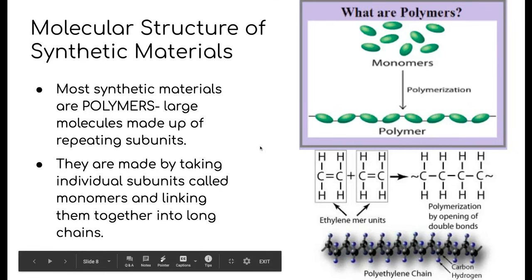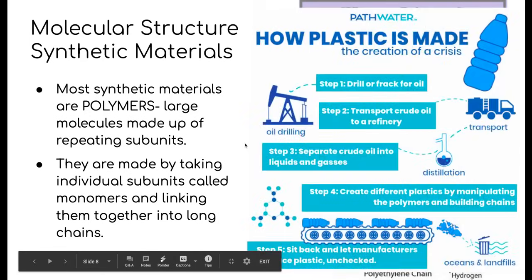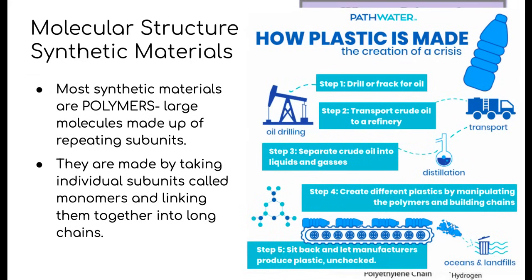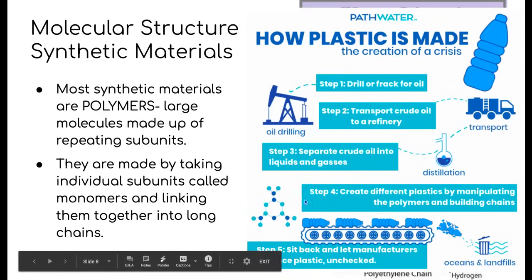You can look down here at an example. An example of a polymer synthetic material is plastic. Plastic is created from drilling or fracking natural oil like petroleum, which is then chemically altered into individual monomers, which are then strung together into long chains and turned into the plastic products that we use today.